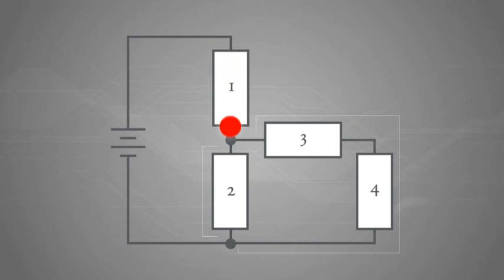Kirchhoff's current law states that the sum of the currents flowing into a node equals the sum of the currents exiting the node.